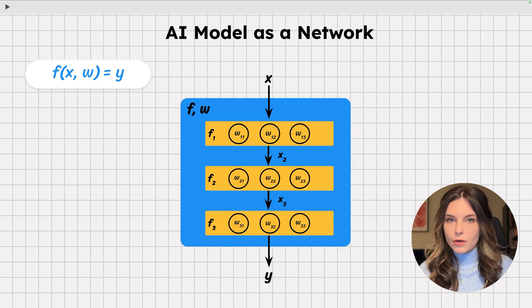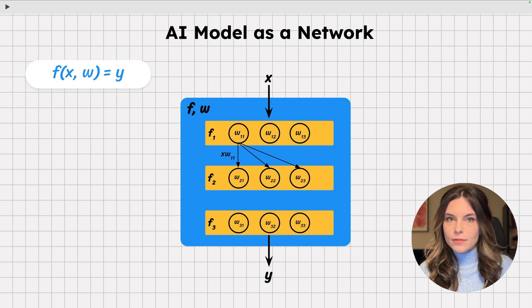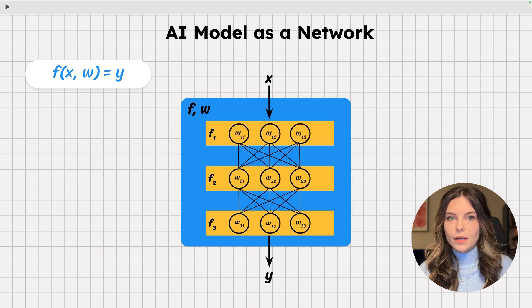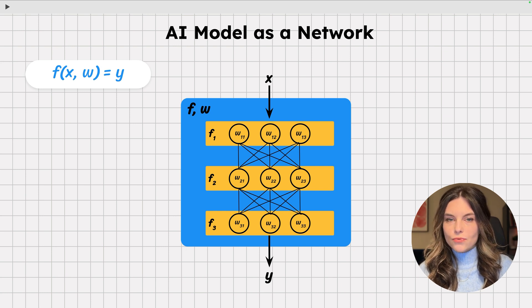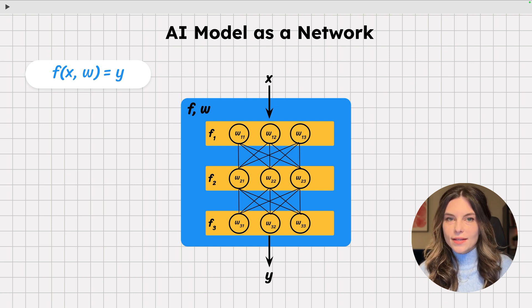Zooming into each layer, we can represent every weight as a node. X flows through layer 1 where it gets multiplied by w11, and the result flows to the next layer to all of the weights. Applying the same reasoning across all layers, we get this graph with a lot of edges. Since this image resembles very early representations of neurons firing in a brain, where each neuron is a weight, AI models are sometimes called neural networks.